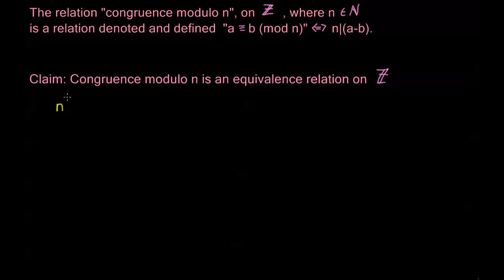So, if I have n divides a minus a, well, for any a, this is going to be zero. So, n does, in fact, divide a minus a. So, this is for every a in the integers. And this is the requirement that we need, that congruence is reflexive. Right? For any element in the integers, that element is going to be congruent to itself, mod n, no matter what n is.